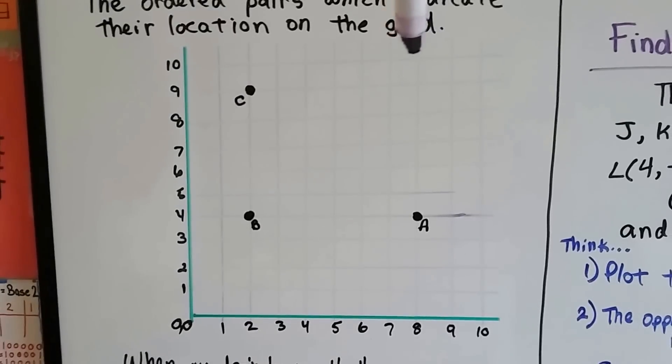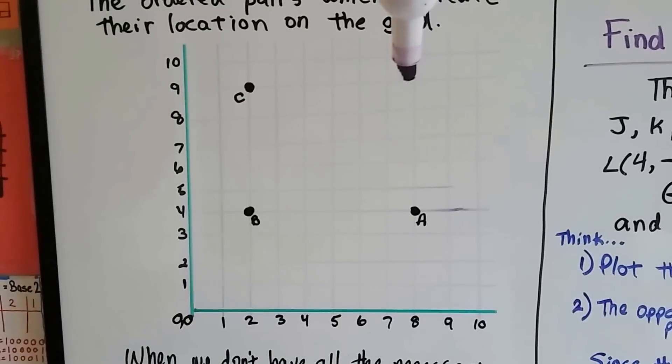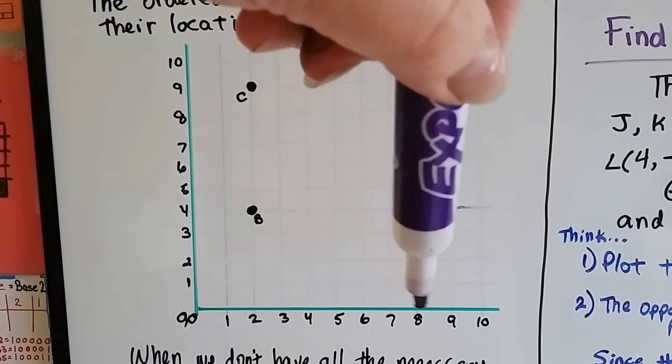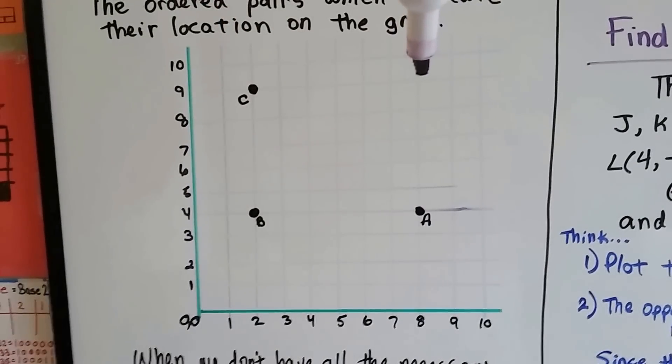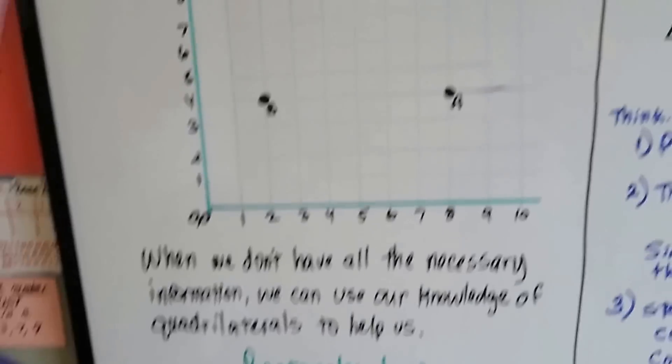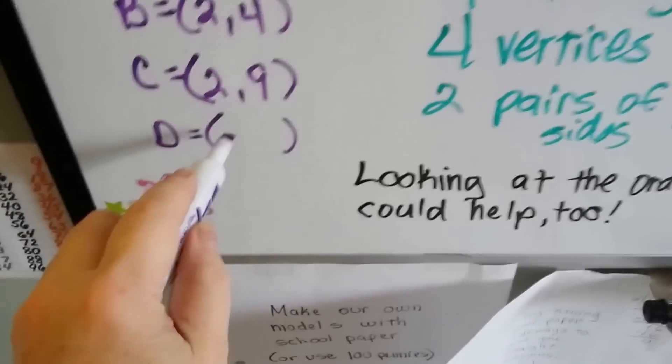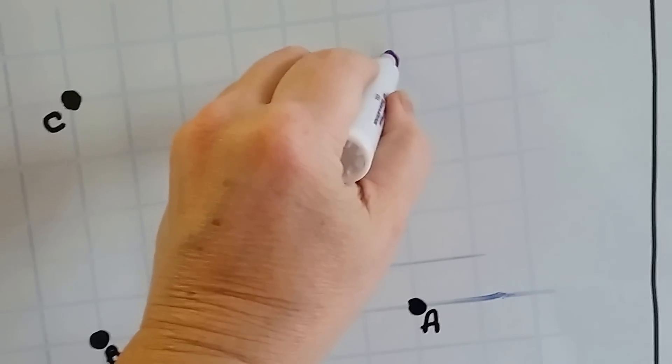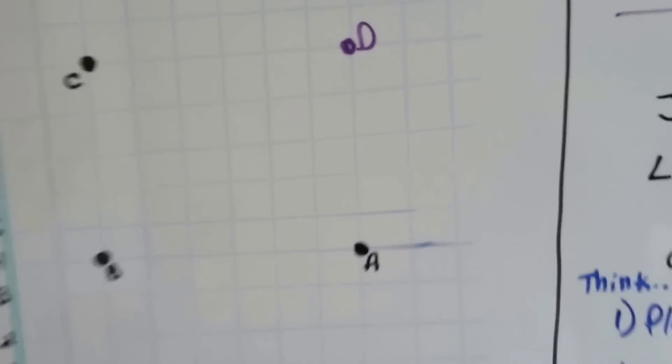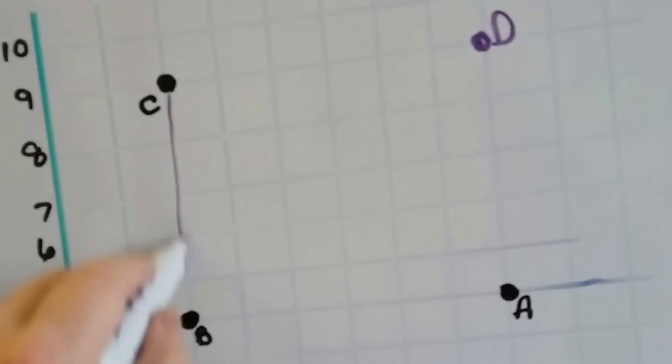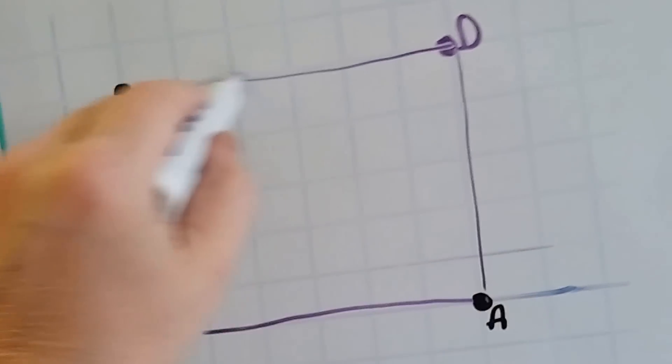So, if it's got two pairs of parallel sides and four right angles, do you think that this right here would be the spot for the next point? That would be on the x-axis, it would be on the 8. And on the y-axis, it would be on the 9. So, the ordered pair would be 8 comma 9. And that would be D.